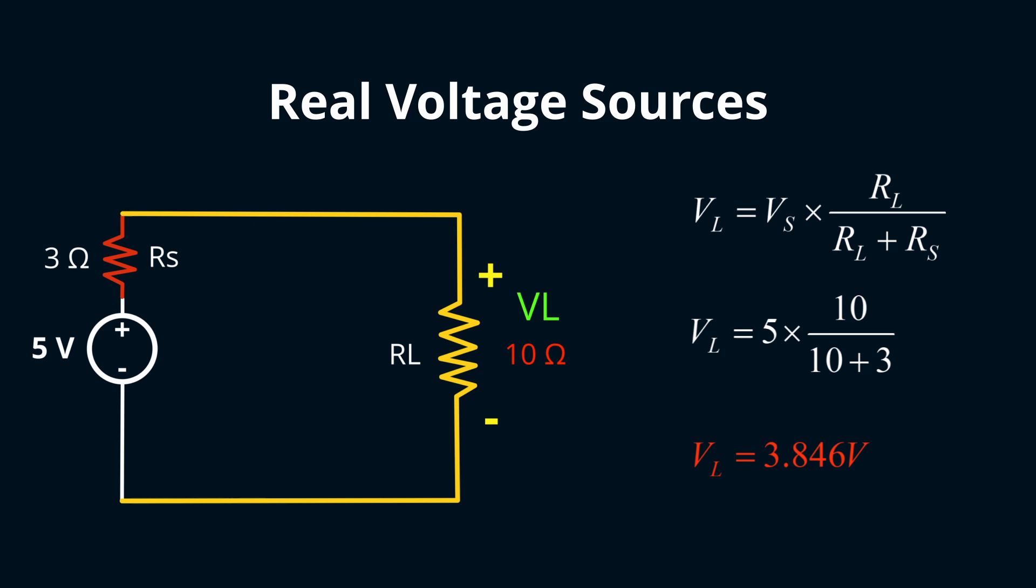From this, we discern a pattern. As the load resistance nears the voltage source's internal resistance, the supplied voltage veers further from our ideal.